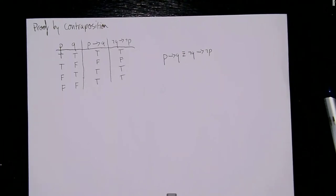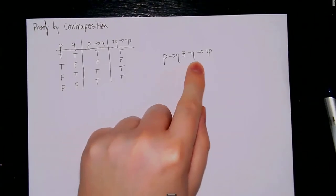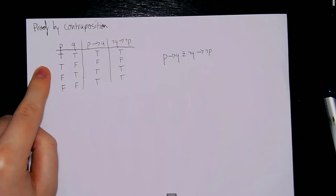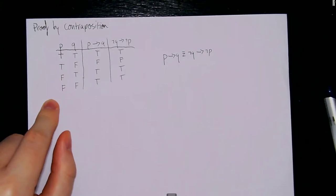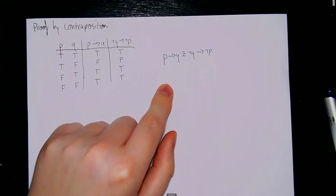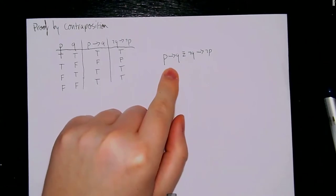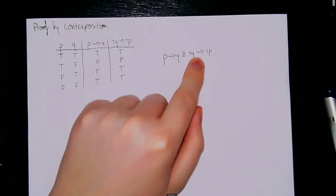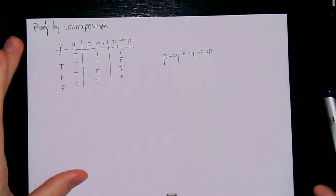I want to remind you of the fact that a conditional statement is equivalent to its contrapositive, and I have the truth table here that proves this. So what we can actually do — we've talked about this before — if we have an if-p-then-q statement and we start transforming it using logical equivalencies, if we can prove that transformation is true, then we can prove that the original statement is true.